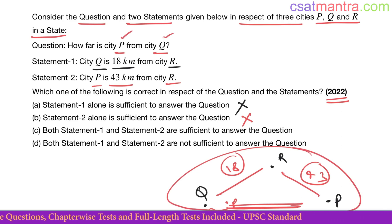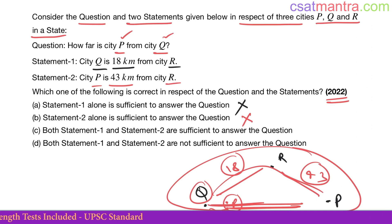To reach Q from P, one need not travel this way; one can travel this way. So both the statements are not sufficient to answer the question. Answer D.